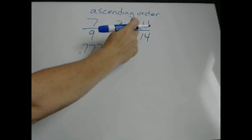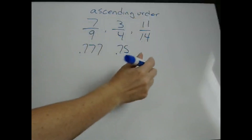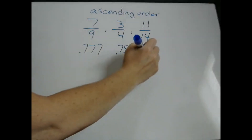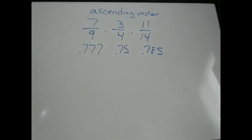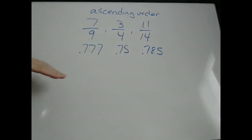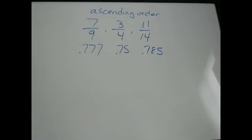11 divided by 14 gives 0.785. So now it's easier, I think, for most people to look at decimals and figure out which one is the smallest and which is the greatest.